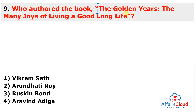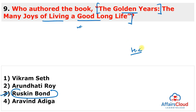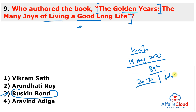Next question: Who authored the book 'The Golden Years: The Many Joys of Living a Good Long Life'? This book was authored by Ruskin Bond, an Indian author. The book was published by HarperCollins India and released on 19th May 2023, on the occasion of Ruskin Bond's 89th birthday. The book covers the last 20 to 30 years of his life — his 60s, 70s, and 80s. Ruskin Bond was awarded the Padma Shri in 1999 and the Padma Bhushan in 2014 under the Literature and Education category.